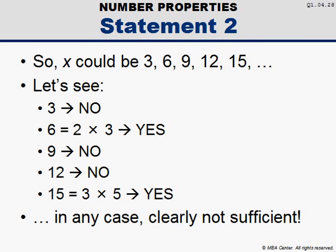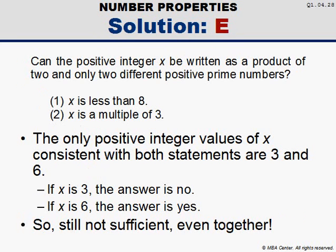But what about statements 1 and 2 combined? Well, the only multiples of 3 below 8 are 3 and 6. If x is 3, then the answer to the question is no. If x is 6, then the answer to the question is yes. But we don't know which x is, 3 or 6. Thus, even combined, the statements are still not sufficient to answer the question.